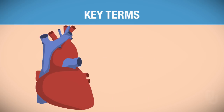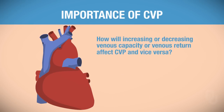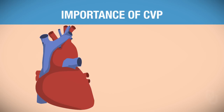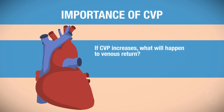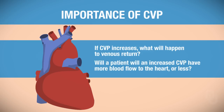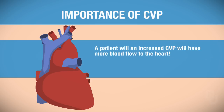Let's think about how increasing or decreasing venous capacity or venous return affects central venous pressure, and vice versa. For example, if central venous pressure increases, what will happen to venous return? Will a patient with an increased central venous pressure have more blood flowing into the heart or less? More blood — so increasing central venous pressure increases venous return.